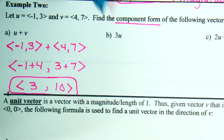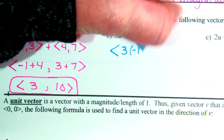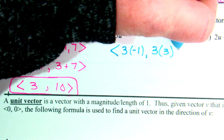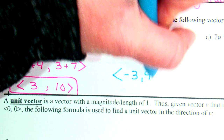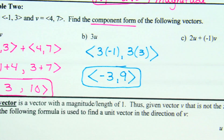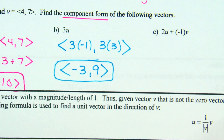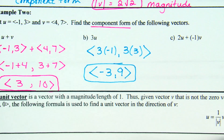Part B: 3U. You're distributing the 3 into U. Since U is negative 1, 3, that means 3 times negative 1 and 3 times 3, giving the vector negative 3, 9.